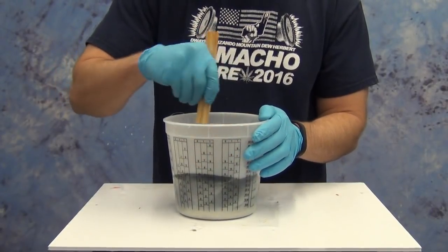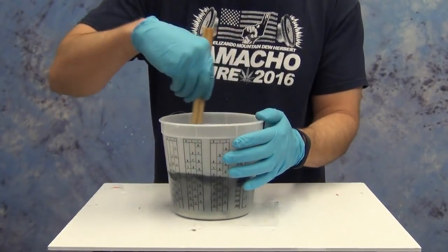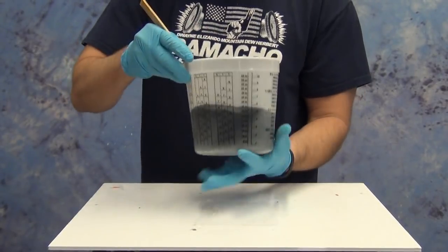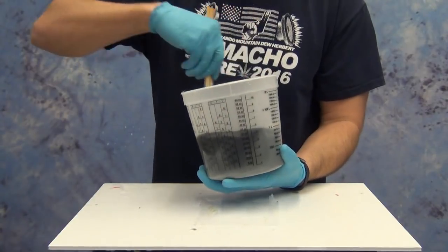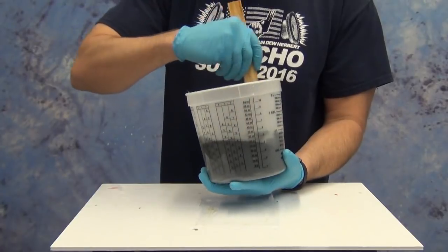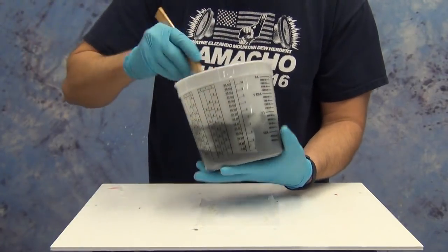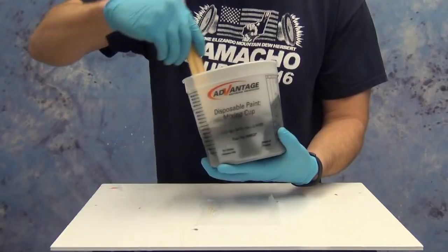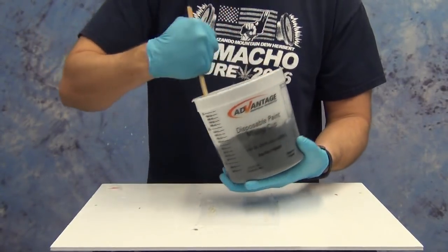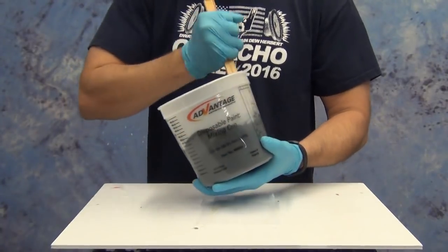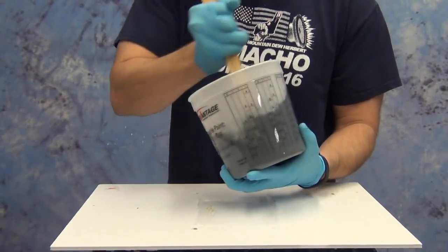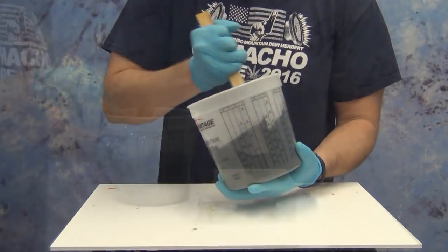Now once we've measured out our A and B components, we're ready to mix those up. 1630 has a long enough working time, I believe it's about a five to seven minute working time at room temperature. So you have plenty of time to accurately mix this and make sure you take the time to scrape the sides and the bottom of the mixing bucket to make sure all of those fillers are incorporated. Once you've stirred that up really good, you're ready to pour that into your mold. Again, there's plenty of working time with this, so there's no reason not to mix it thoroughly.